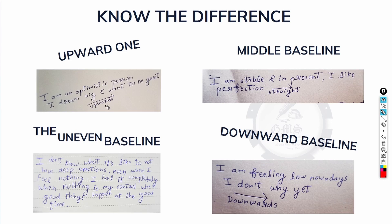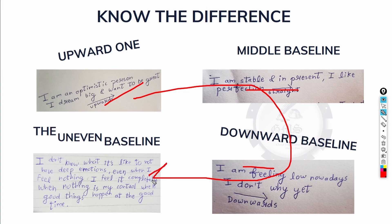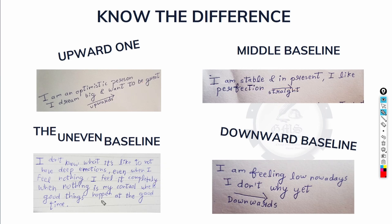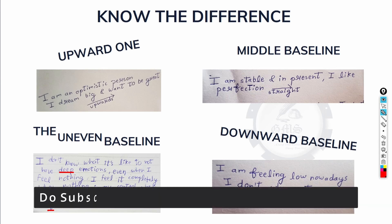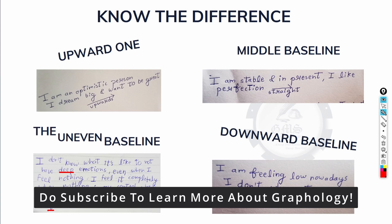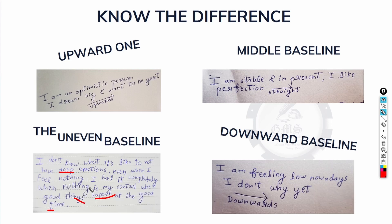Next is the uneven baseline. This is where the writer will have upward, middle, and downward baselines all in one handwriting. The baseline goes upward in one place, downward in another, and straight in another. If you find someone with all three baselines, it indicates that they are not having much emotional stability — they need emotional stability in their life.